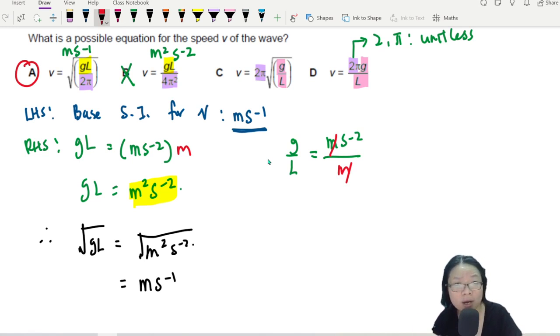You know why? Because the base SI unit have a meter. See here? Where can cancel like that? Hello, cannot. So after you cancel, whether you square root or you don't square root, you definitely will not get the answer.